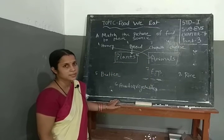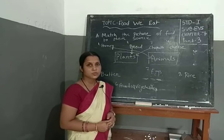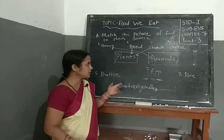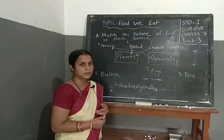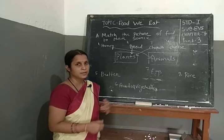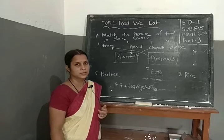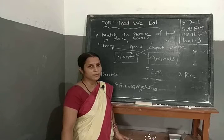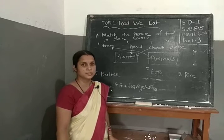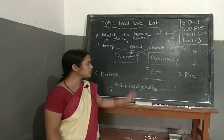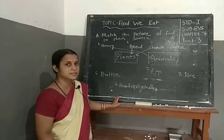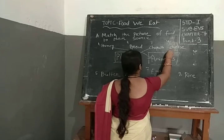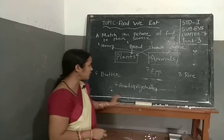Then cheese. We make so many things from milk, like cheese, butter, and ice cream. These are milk products. And milk comes from animals — cow gives us milk. So cheese is an animal product.